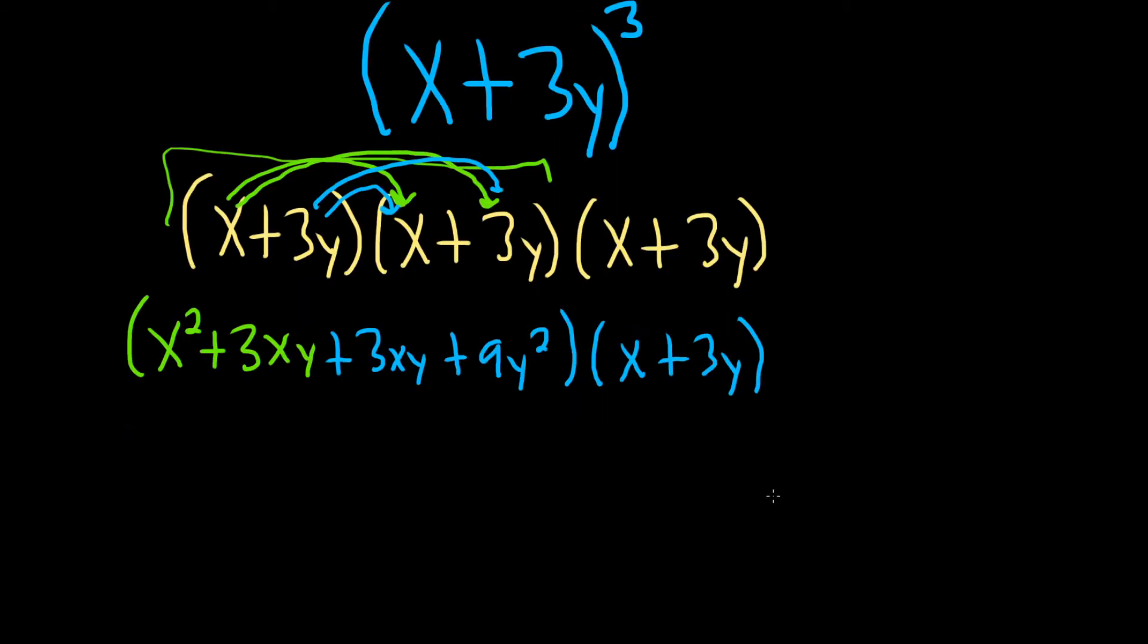Good stuff. Looks like we can combine some like terms here. This will be x squared plus 3xy plus 3xy is 6xy. And then we have our 9y squared here. And then we're left with x plus 3y.